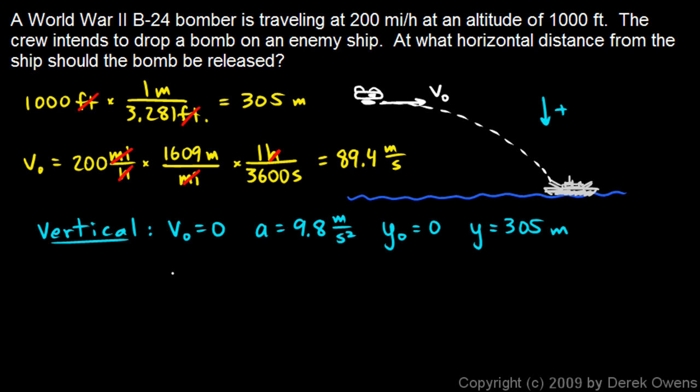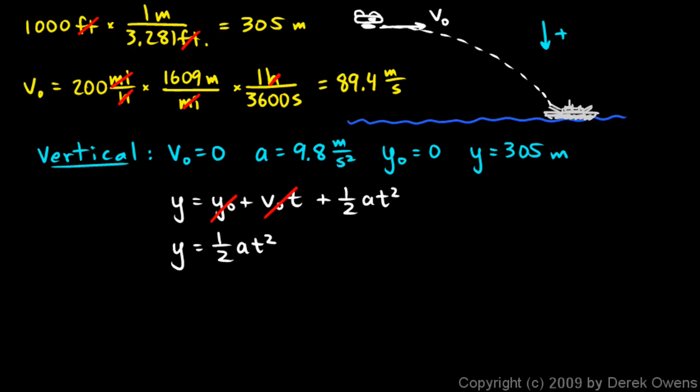And then I'll use this equation. y is equal to y0 plus v0t plus 1 half at squared. And in this case, the initial height was 0 and the initial velocity was 0. So I just have this: y is 1 half at squared. And then from that, I can figure out the time that it takes to fall that distance.